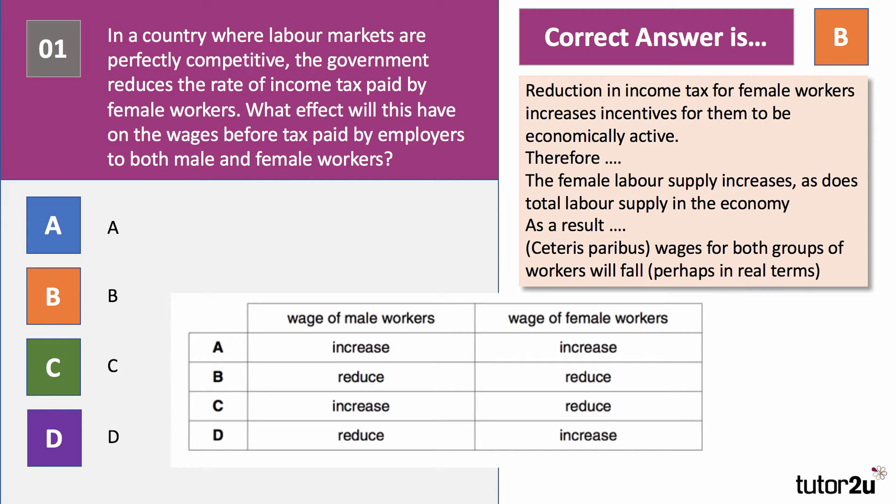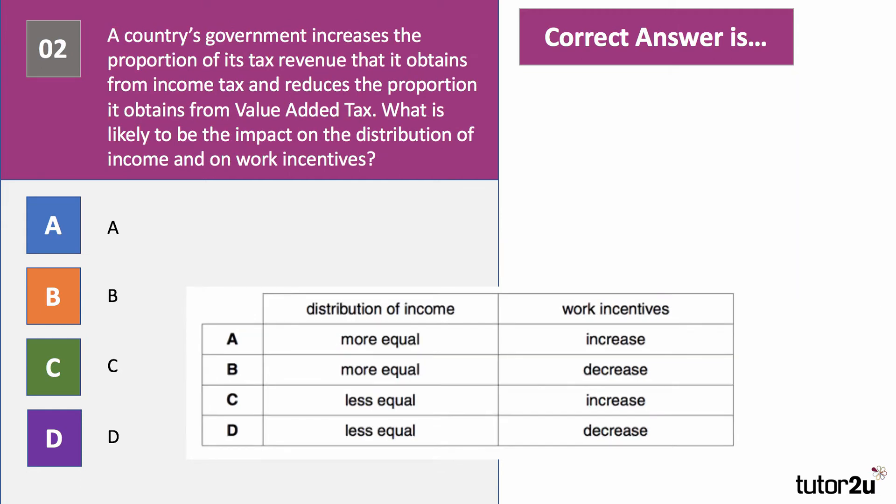Question two. The country's government increases the proportion of tax it gets from income tax and reduces the proportion of tax revenue it gets from VAT. What is likely to be the impact on the distribution of income and also on work incentives? Have a go.